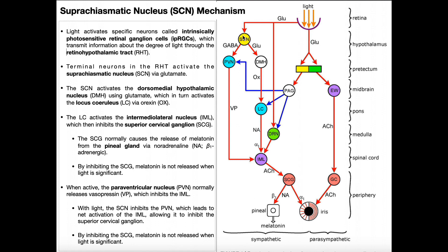The suprachiasmatic nucleus can activate the DMH — the dorsomedial hypothalamic nucleus. The suprachiasmatic nucleus activates this structure via glutamate, so the SCN can also release glutamate. It activates the dorsomedial hypothalamic nucleus.